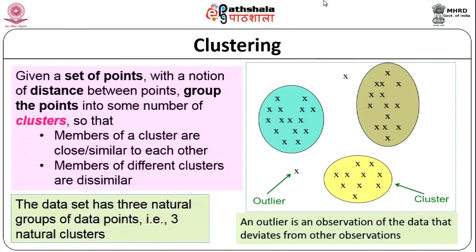Outlier detection is a very important concept in machine learning, used especially in medical applications where something dissimilar from others may indicate a disease. It is now used in anomaly detection and similar applications. The number of clusters formed depends upon a distance threshold: a higher threshold means fewer clusters, a lower threshold means more clusters.